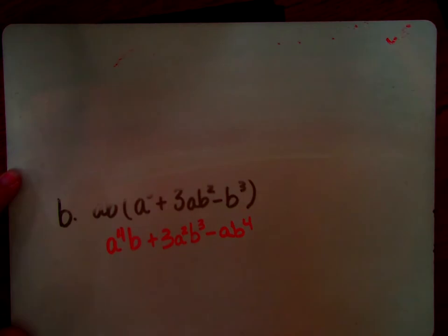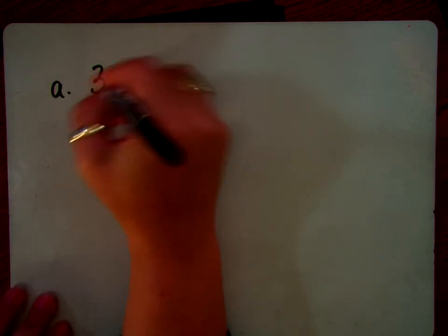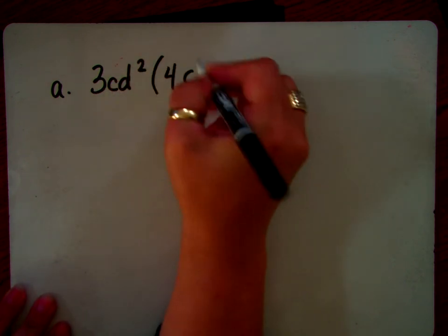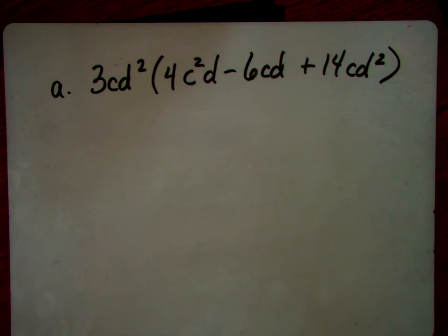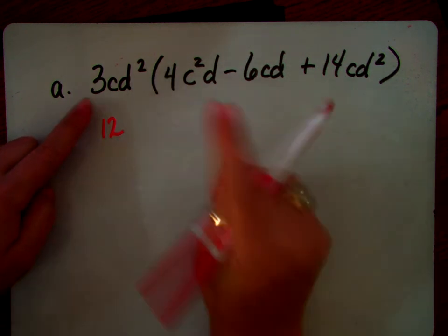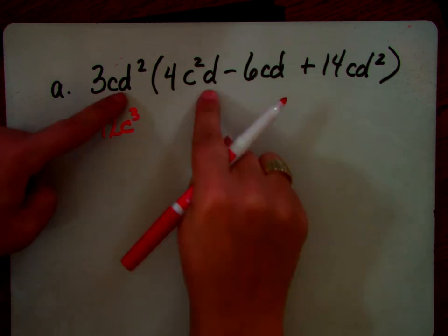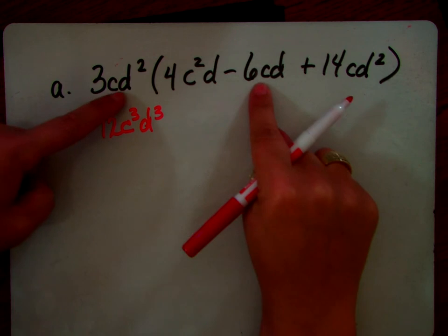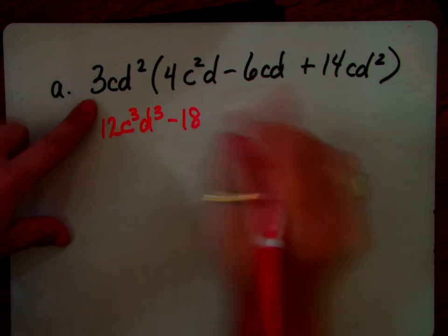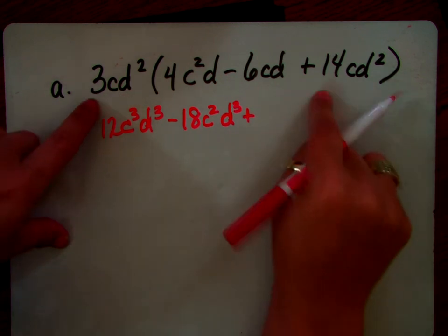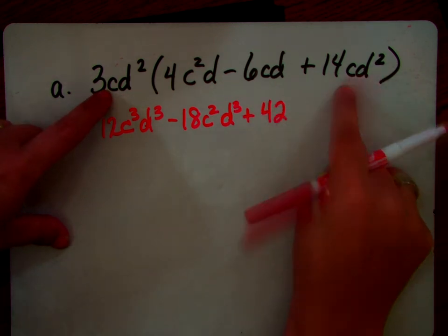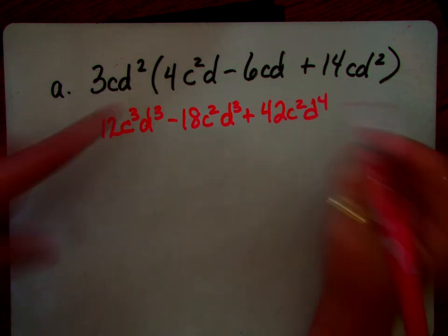Okay, we're going to try 2 more that are a little more difficult. All right, so we have 3cd squared times 4c squared d minus 6cd plus 14cd. All right, so I want you to look at the numbers first. So 4 times 3 is 12. Then look at your c's. I have 1 c. I'm adding 2 more. Now I have 3 d's. I have 2 here, 1 here. Now I have 3. Now I'm going to go here. Negative 6 times 3 is negative 18. How many c's do I have? I have 1, 2. How many d's do I have? I have 2, 3. Plus 14 times 3 is 42. How many c's? 1, 2. How many d's? 2 and 2 is 4.